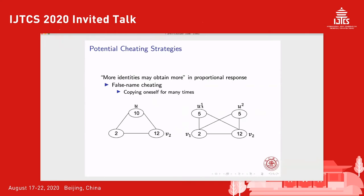The third strategy is called false name cheating. This figure illustrates the strategy: basically the agent may copy himself many times. In this example, the agent copies himself twice and uses these two identities to share resources with his neighbors. Each copy identity will have part of his original resource, and the agent may consider that such a strategy helps him to improve his utility.